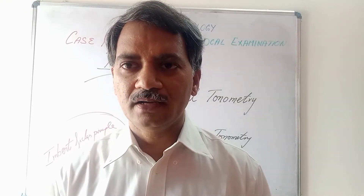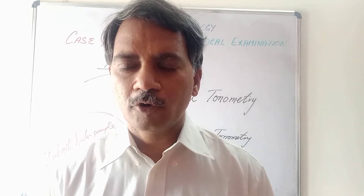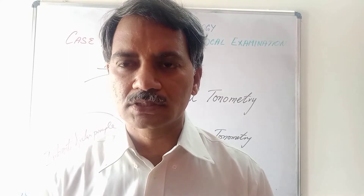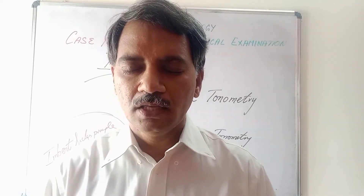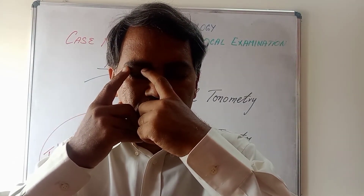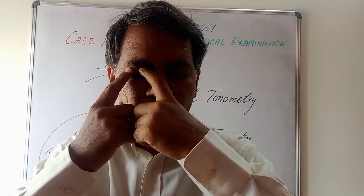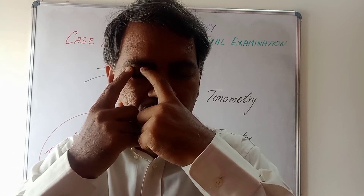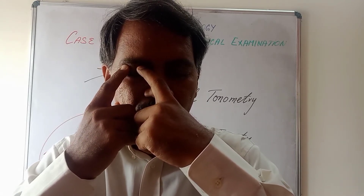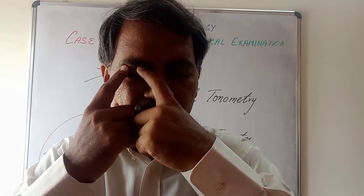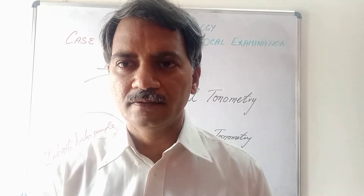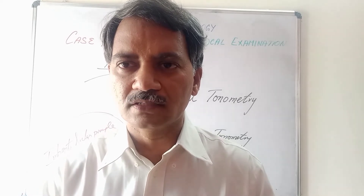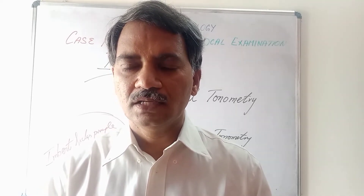To perform digital tonometry, the patient must close their eyes and look downwards. Place both index fingers on the upper eyelid of the eye being tested. One finger is kept stationary while the other exerts a small pressure. When pressure is applied, there will be a small displacement felt by the stationary finger. If the globe is firm in consistency with a small fluctuation, the intraocular pressure is considered normal.